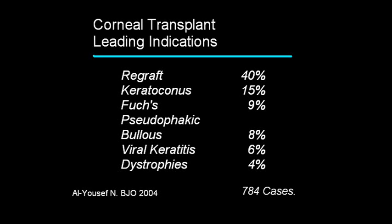Here is a list of the leading reasons for corneal transplant from a 2004 study in the British Journal of Ophthalmology. Replacing a failed graft is the first reason. New transplants would happen because of keratoconus, Fuchs' dystrophy which is the endothelial dystrophy, pseudophakic bullous keratopathy which is endothelial damage typically from cataract surgery, then viral keratitis and other corneal dystrophies.